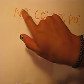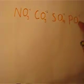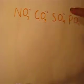Now knob-cob-soy-poi can also help you memorize the charges. The charges go negative one, negative two, negative two, negative three. So all you have to memorize is one, two, two, three — knob, cob, soy, poi.